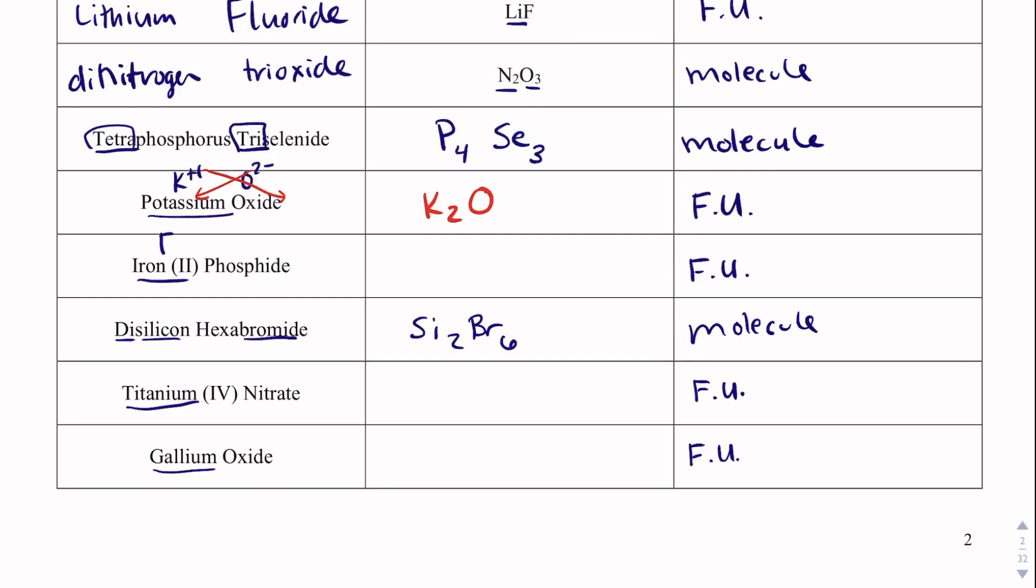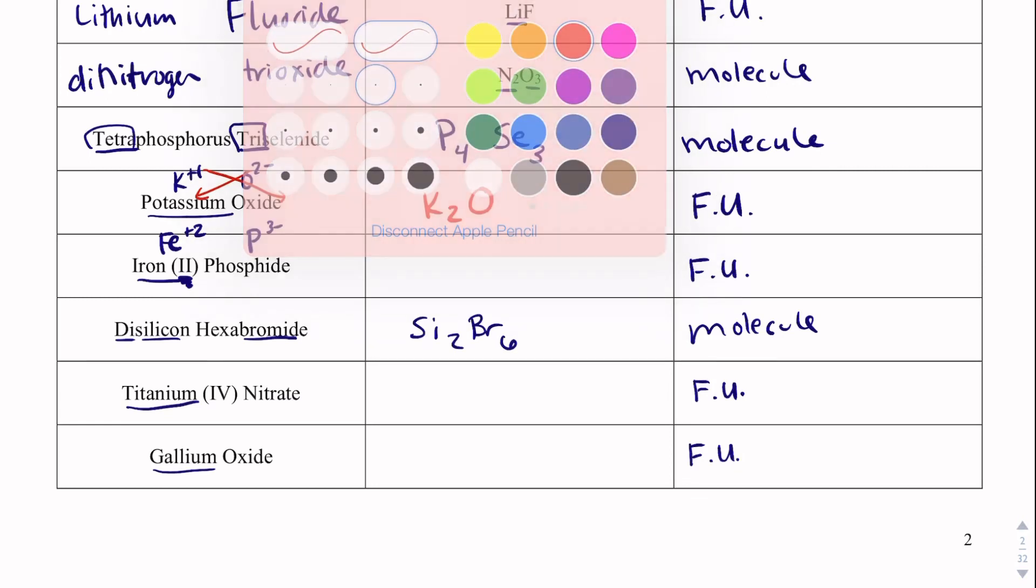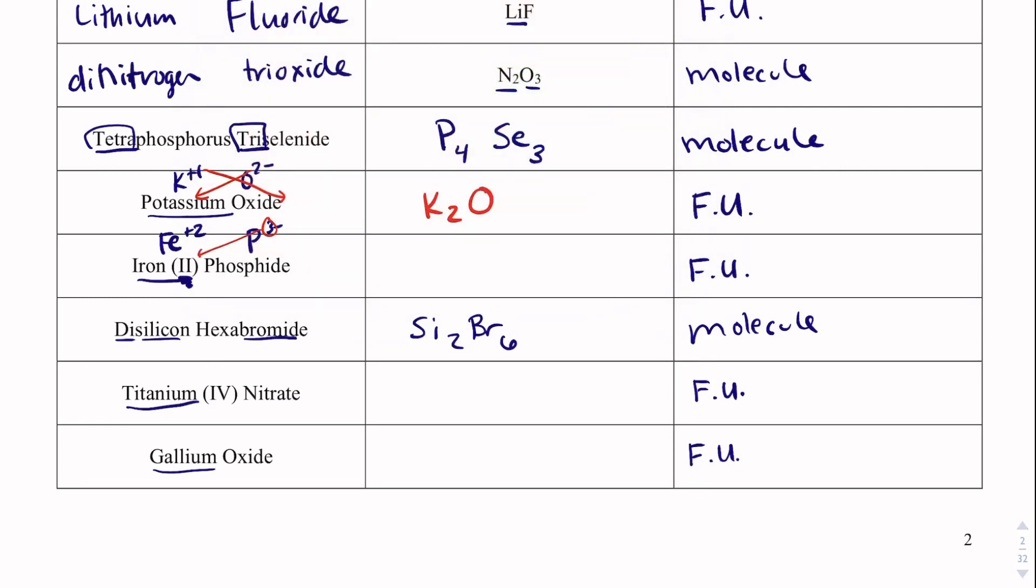Here we have iron. Iron, they tell us, is plus 2. Then we find phosphorus. Phosphate is P3 minus. Take the 3, give it to iron, Fe3. Take the 2, give it to phosphorus, P2.